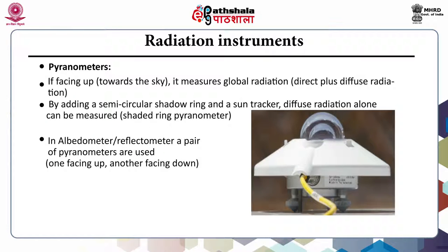Another type is called the pyranometer albedometer, in which there are two pyranometers. One faces up and another faces down. The upward-facing pyranometer measures incoming global radiation and the downward-facing pyranometer measures the reflected short wave radiation. The result gives the short wave reflectivity of the object.